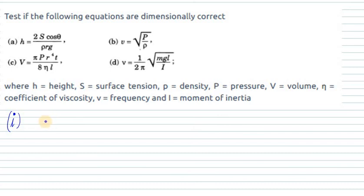Hello everyone. Let's start with another question. It says: test if the following equations are dimensionally correct or not. We have the first equation as h equals 2S cosθ over ρRg, where ρ is density. Let's find out whether the dimensional formula is correct or not.